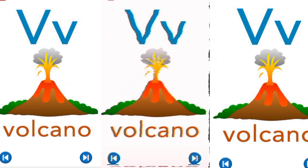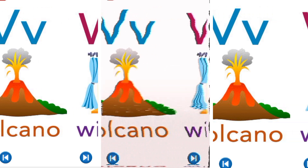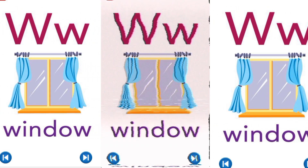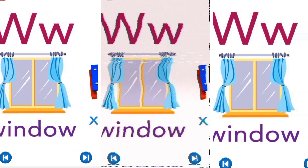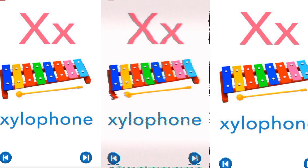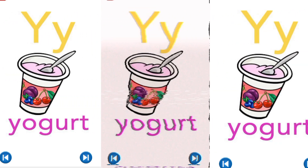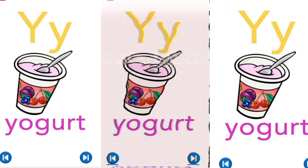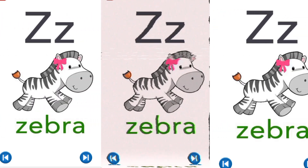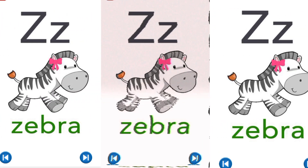V, V for volcano. W, W for window. X, X for xylophone. Y, Y for yogurt. Z, Z for zebra.